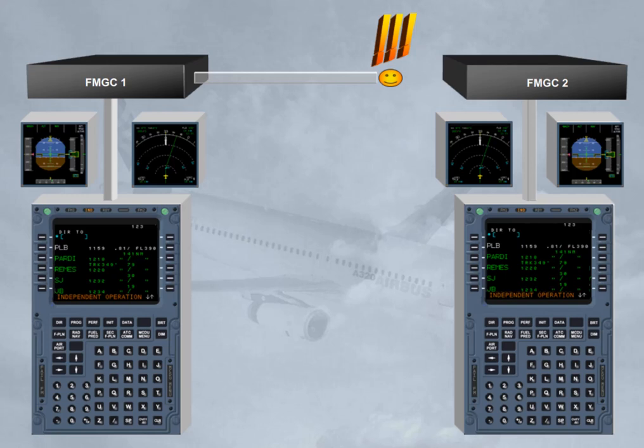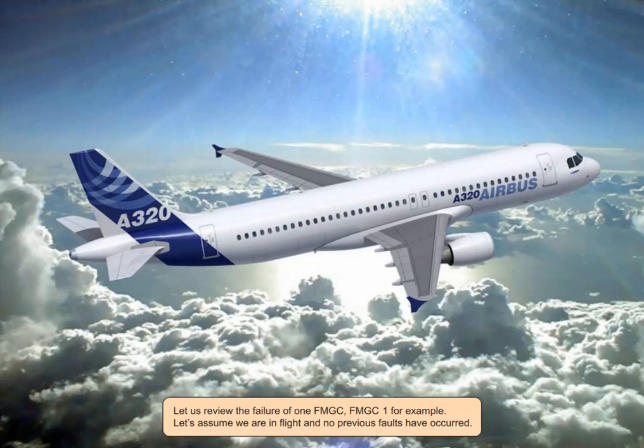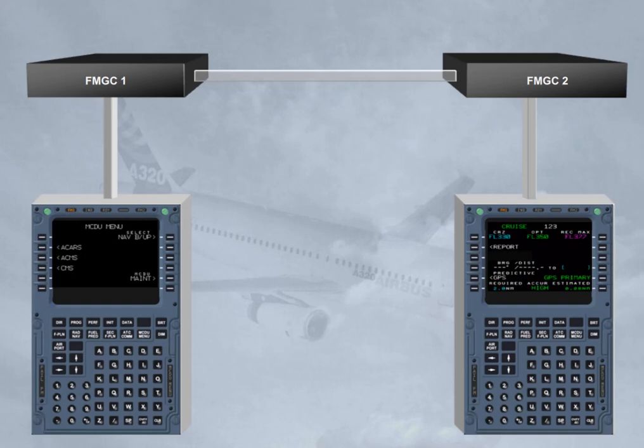When the cross-talk is recovered, the FMGCs revert automatically to dual mode. Let us review the failure of one FMGC — FMGC 1, for example. Let's assume we are in flight and no previous faults have occurred. If Autopilot 1 and autothrust were engaged, Auto-Flight AP-Off and Auto-Thrust-Off are triggered on ECAM. AP-1 and autothrust go off.